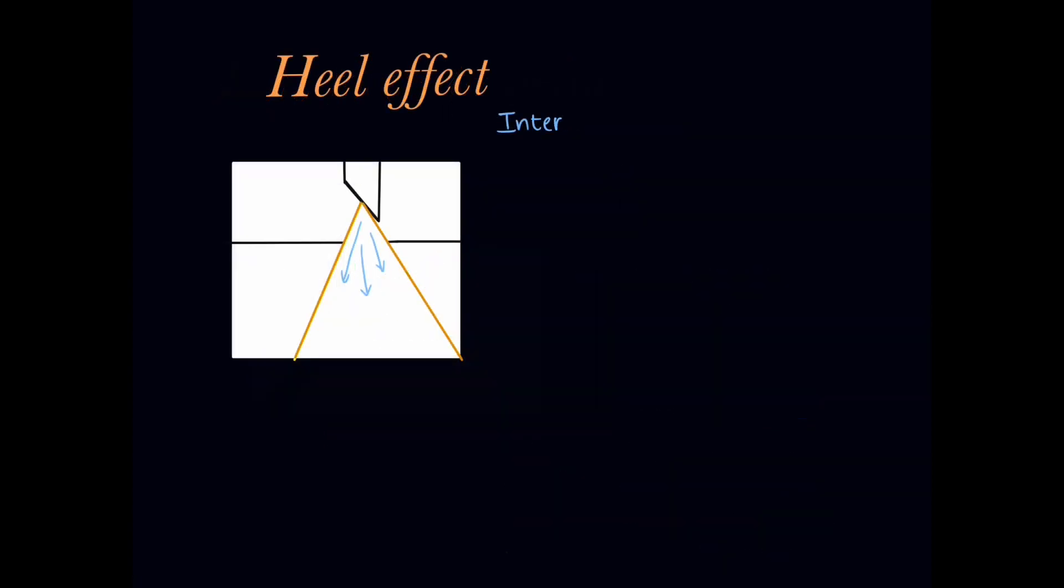Now, the second principle is called the heel effect. It means the intensity of x-ray, that primary beam which is produced is not uniform throughout the beam. The intensity varies.